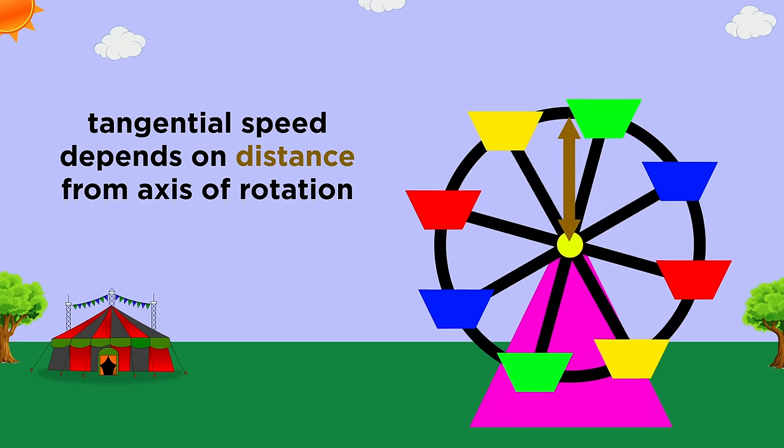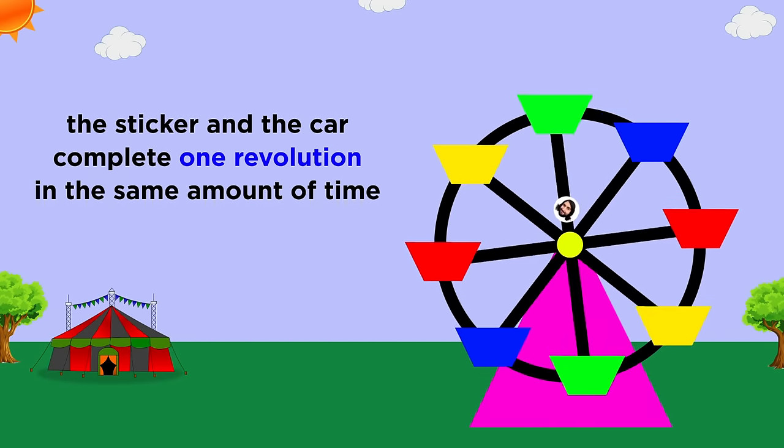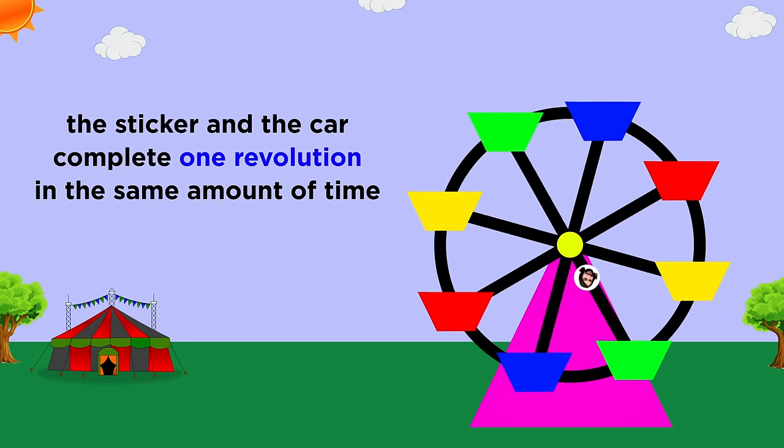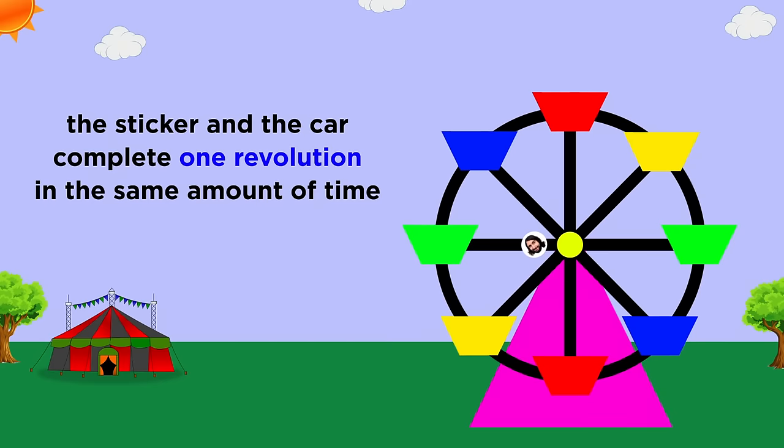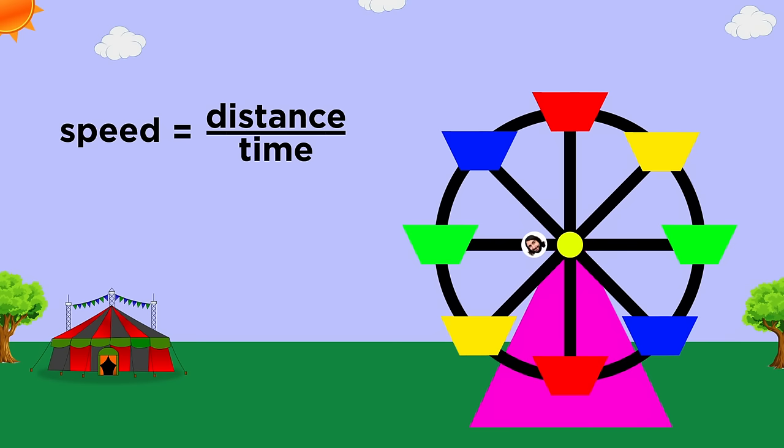The tangential speed will depend on the distance of the car from the axis of rotation. If you place a sticker on the wheel very close to the center, it will complete one revolution in the same amount of time as one of the cars, but the sticker will travel just a short distance that you could trace with your finger, while the car travels much farther, all the way along the edge of the wheel. Since speed is distance over time, a shorter distance covered in the same amount of time must mean a slower tangential speed.